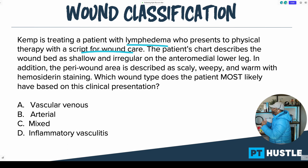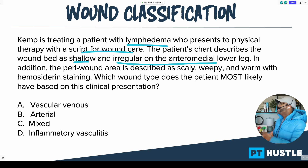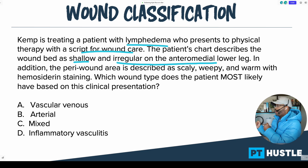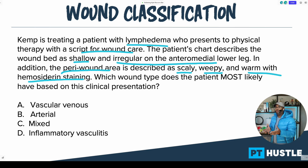The patient's chart describes the wound bed as shallow and irregular on the anterior medial lower leg. This is very important information — I talk about this all the time with my coaching students: there are specific things that the test maker leaves in the question to help guide you to the right answer. In addition, the peri-wound area is described as scaly, weepy, or warm with hemosiderin staining.